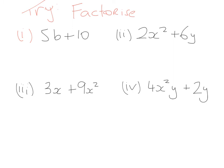Now, pause the video and have a go at these practice questions. For the first one: what numbers do they have in common? That's 5. 5 times what gives me 5b? That's b. 5 times what gives me 10? That's +2. So the answer is 5(b + 2). Second question: the highest common factor between 2 and 6 is 2, and they have no letters in common. So: 2 times what gives me 2x²? That's x². And 2 times what gives me 6y? That's +3y. Answer: 2(x² + 3y).